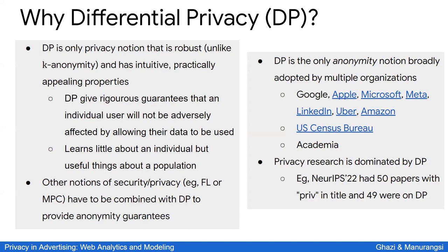Differential privacy is a major research topic in academia and is widely adopted in practice in both public and private sectors. A notable example is the 2020 US Census, which was released with differential privacy guarantees. Similarly, new APIs in web advertising are employing differential privacy, making it a very widely used and important notion.